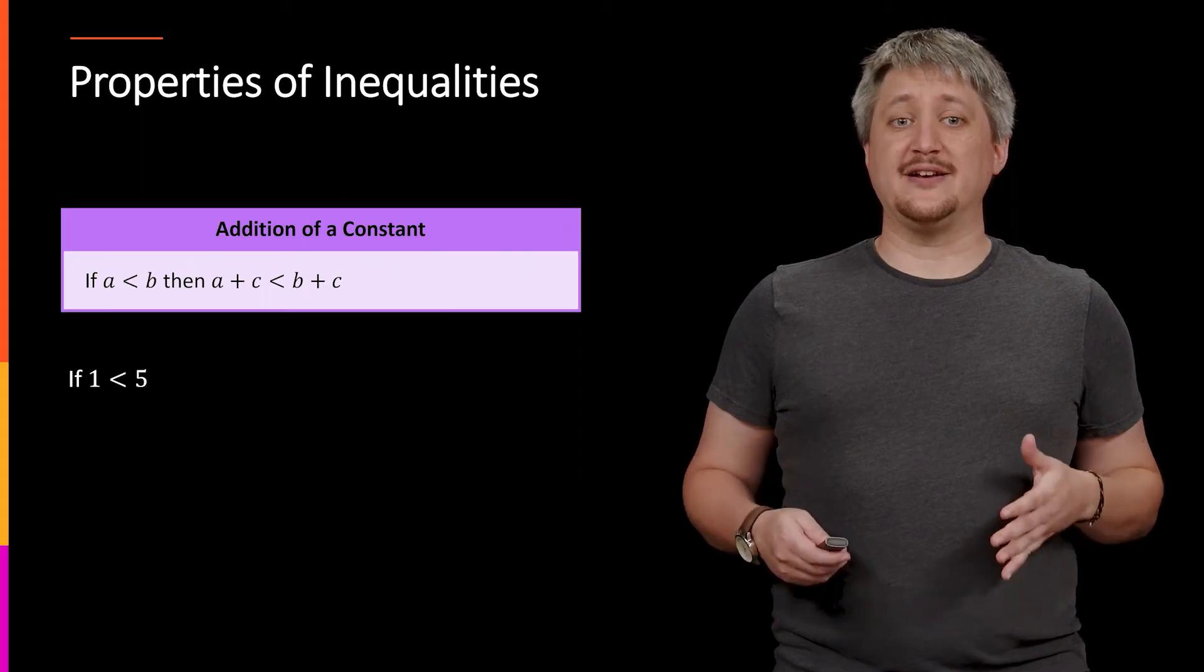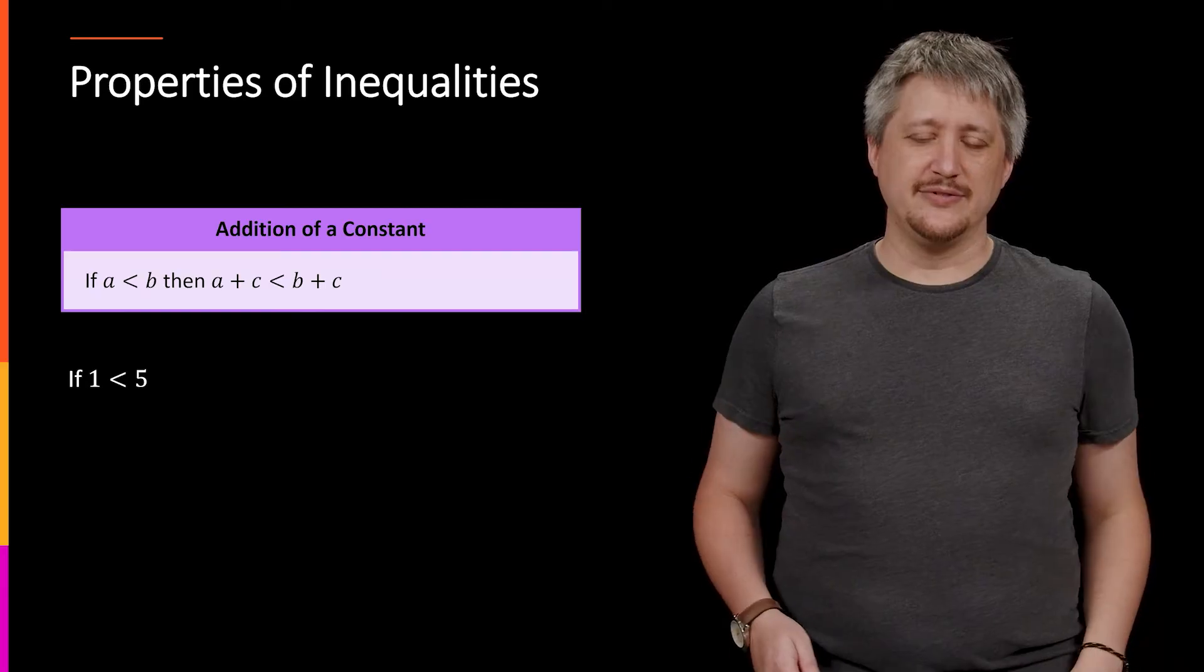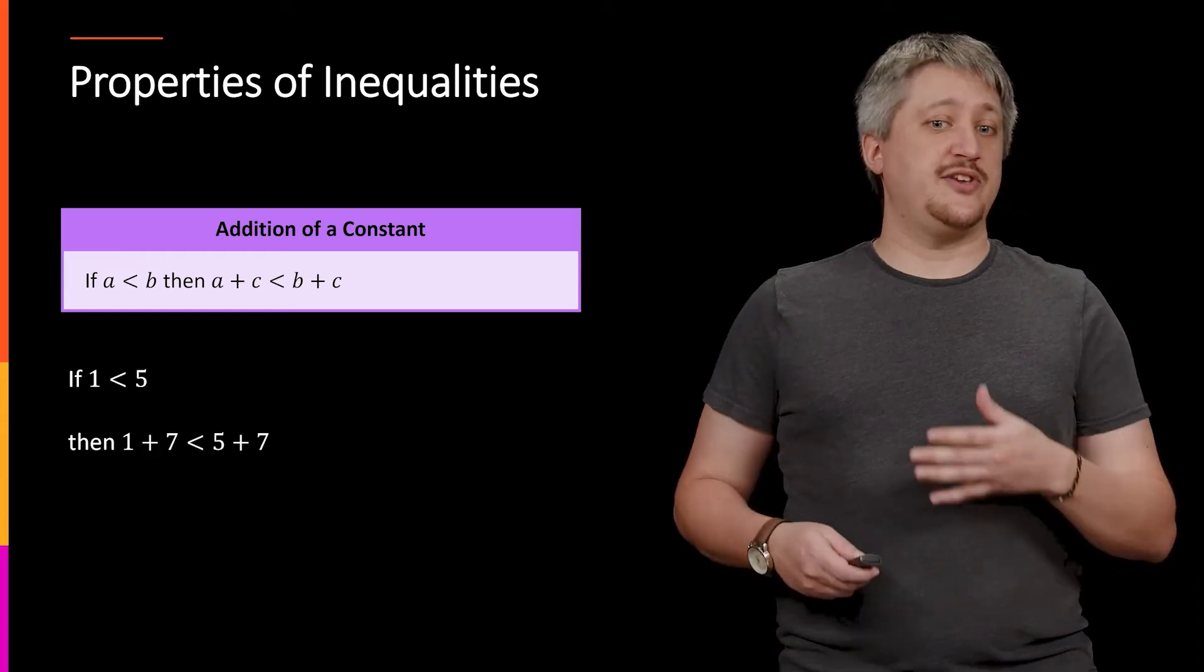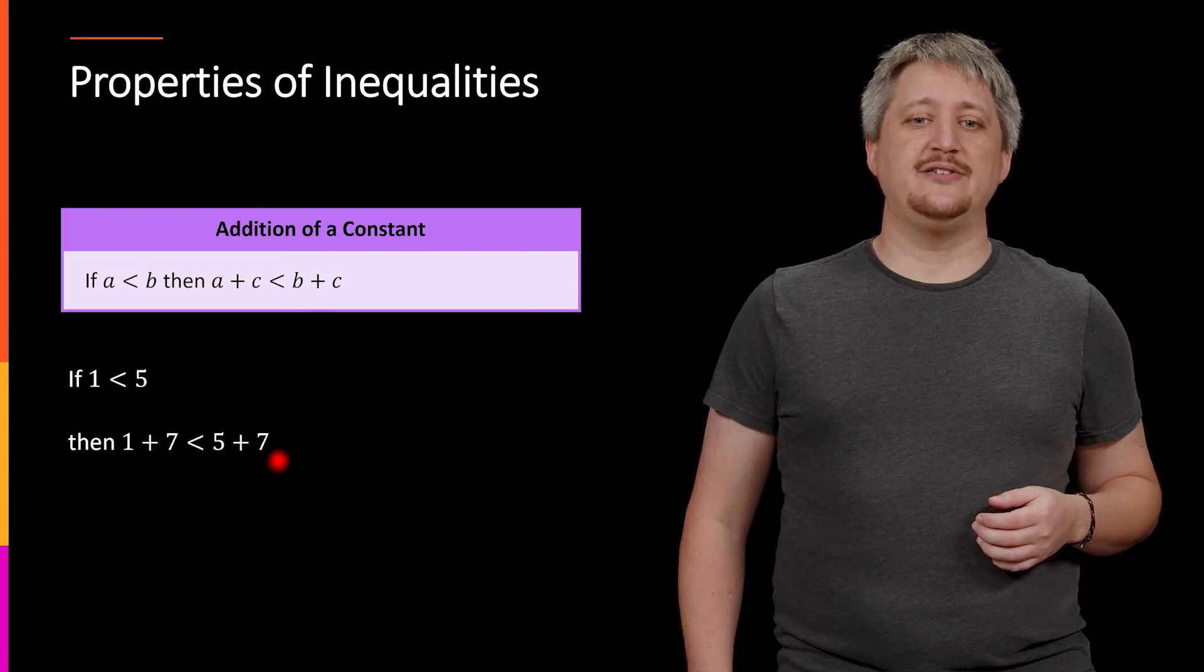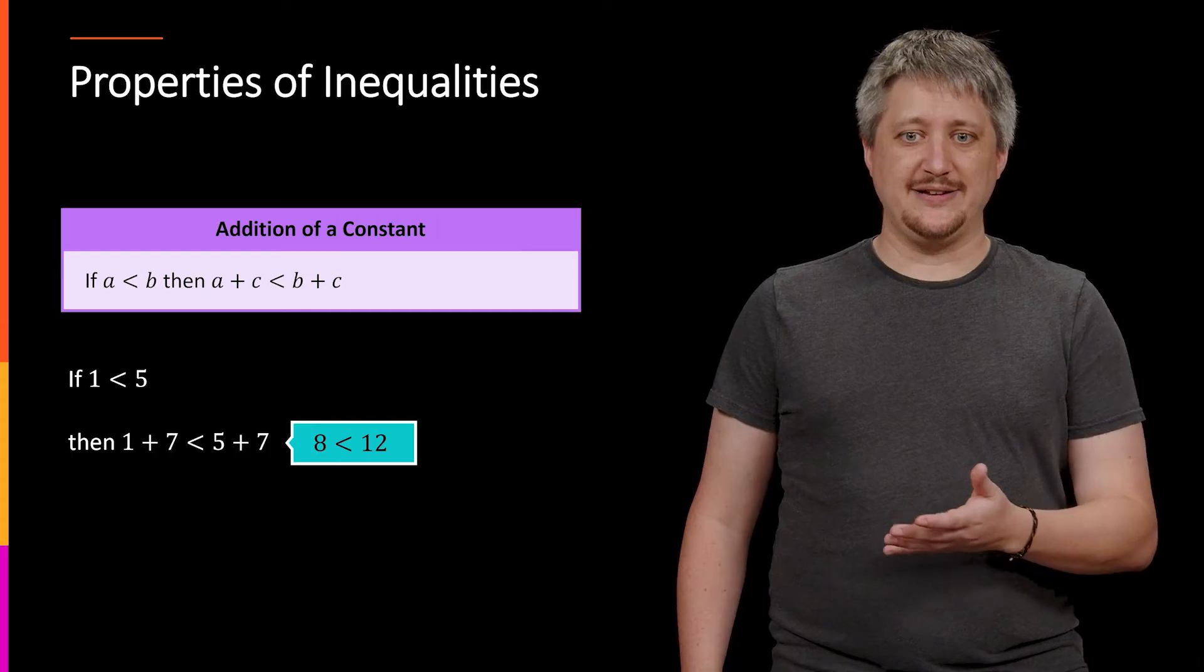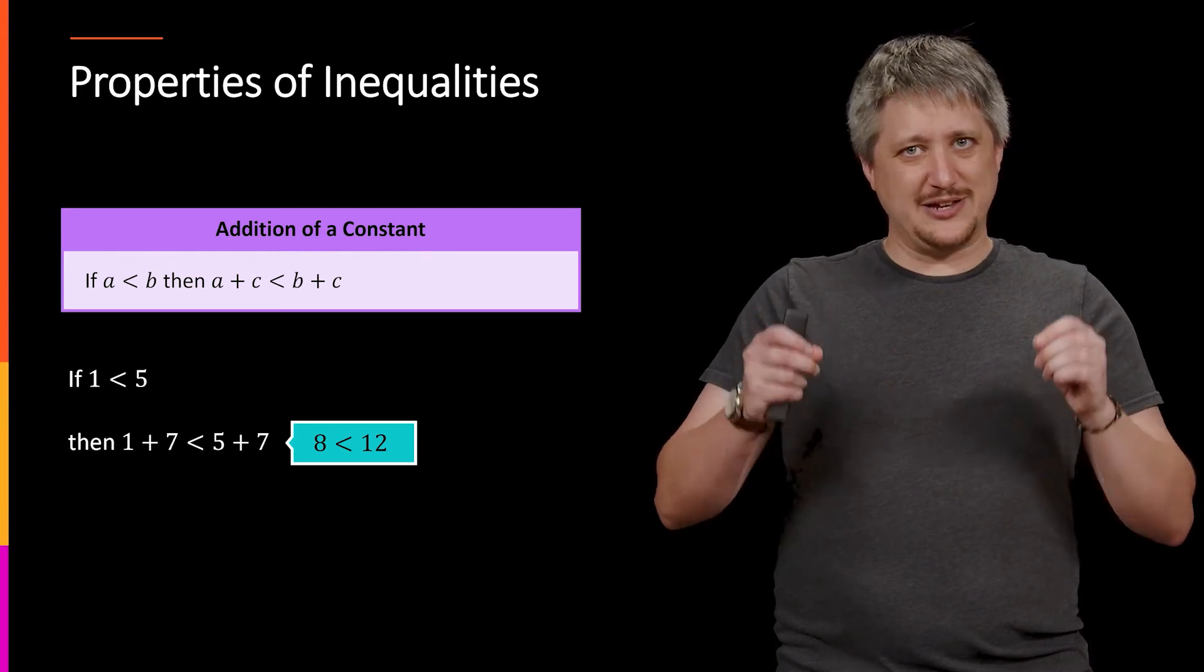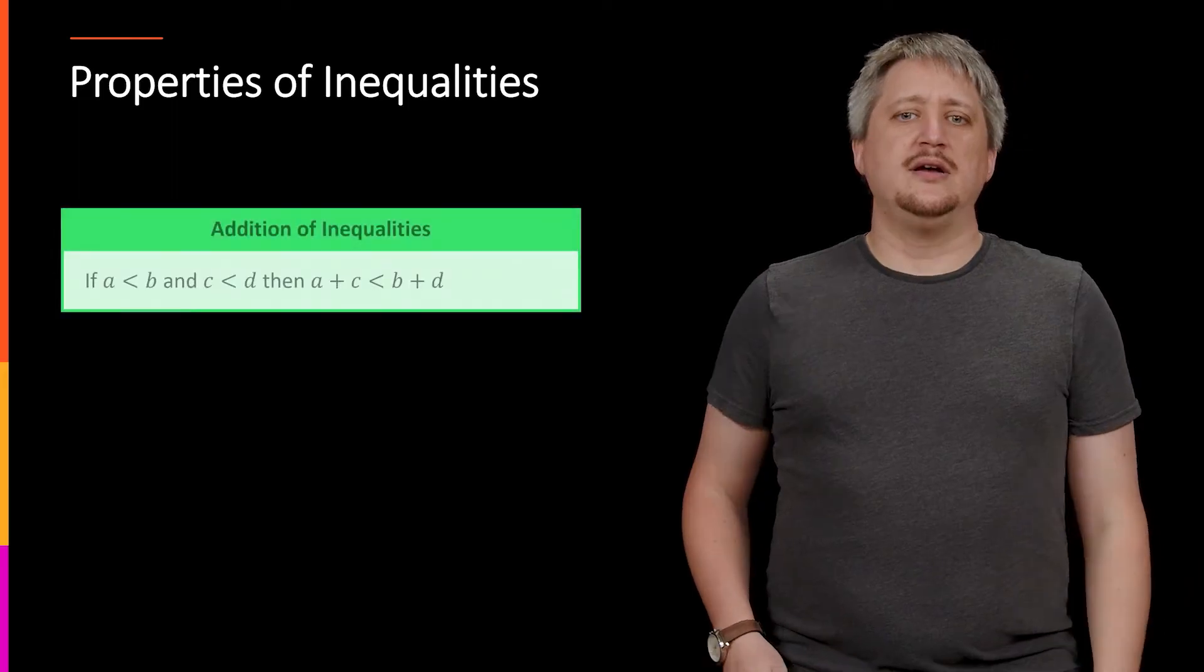Next up, we want to look at adding constants. So if I know, again, deep, deep inside here, one is less than five. But what that's telling me is that if I have some number, positive or negative, I can add it to both sides. Say here's seven. So I can have seven get added to the left and to the right. And unsurprisingly, the inequality doesn't change. Eight is still less than 12. So that's all this addition of a constant is saying, is that if you make sure that you're doing it to both sides, you're all set.